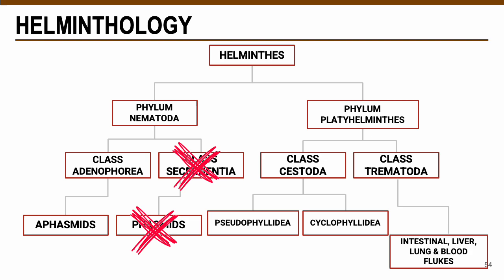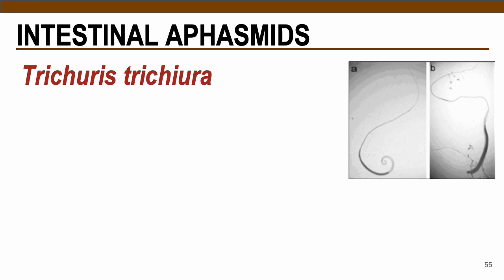We are done with class Secernentea (phasmids). Moving to class Adenophorea, or the aphasmids. Aphasmids do not contain posterior chemoreceptors — hence the name aphasmid, indicating the absence of phasmids.